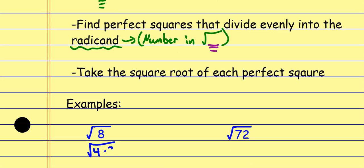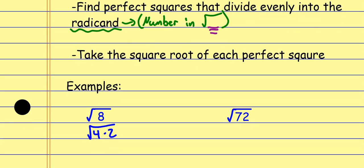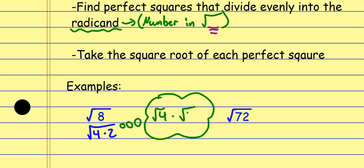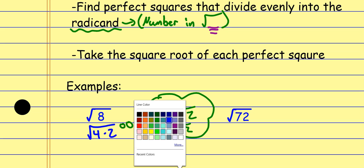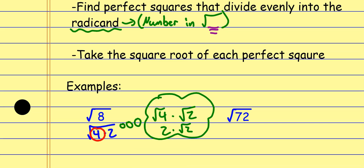Eight is 4 times 2. We already know how to take the square root of 4. So we take the square root of each of these individually. The square root of 4 is 2, and then separately the square root of 2 — we can't really do that one, so I just leave it the way it is. Now this is my answer. I usually put a circle around the perfect square I'm taking the square root of and say the square root of that is 2. Either method is acceptable.